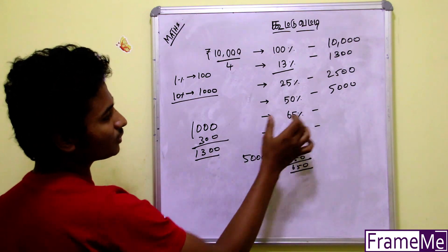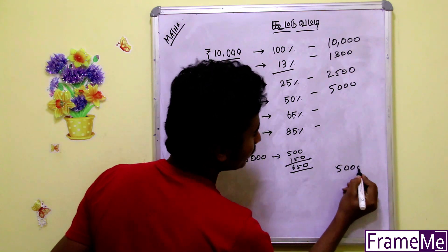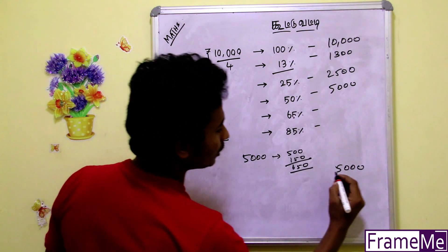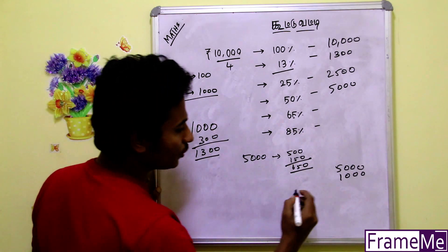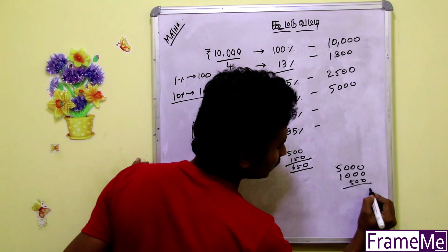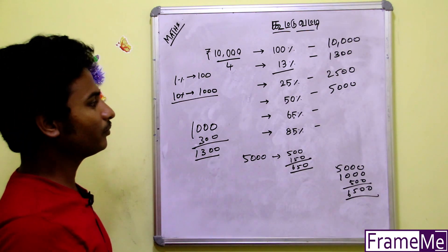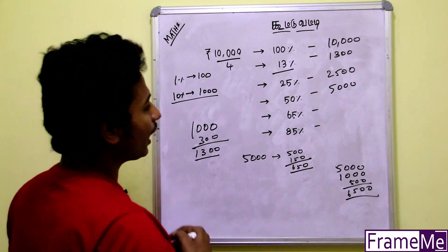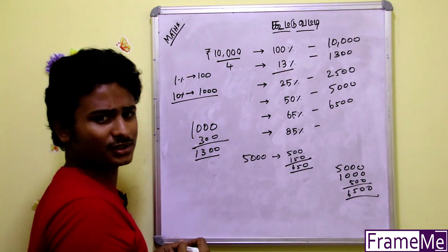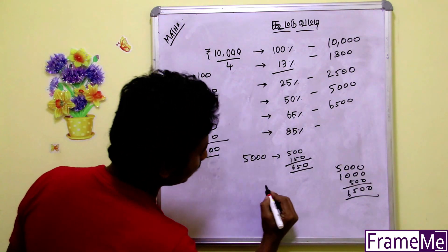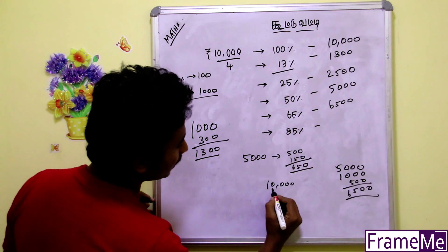Now, 65% is 100. This is 50% is 5000. This is 10% is 1000. This is 50% is 500. So this is 6500. So this is 65% is 6500. Now, 85% is 100 — this is 10,000. Now 15% is 100. 6500 is 6500.